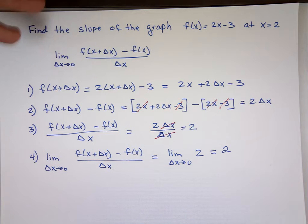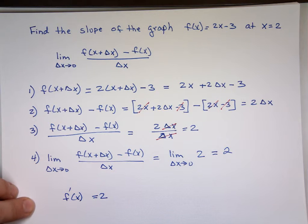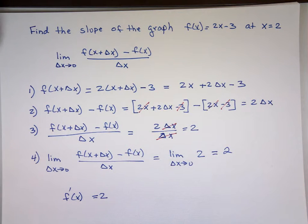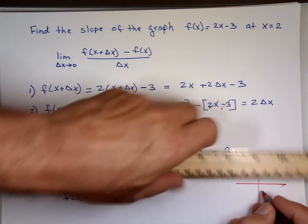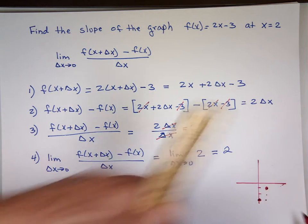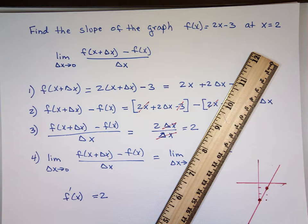Notice this question said 'find the slope of the graph,' not 'find the slope of the tangent line.' The derivative is 2 — and the derivative is the slope of the tangent line. But if you graph 2x − 3, it's a straight line with slope 2 and y-intercept −3. The tangent line of a straight line is the line itself, so they just asked for the slope of the line.